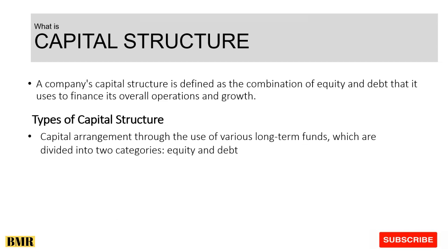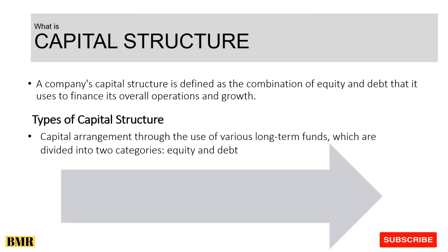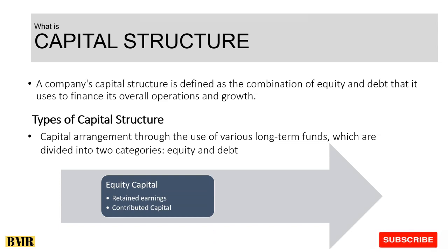The next point is types of capital structure. As mentioned, capital structure is a combination of equity and debt. The first type is equity capital, which is the money owned by the owner or the shareholders. It has two sub-types: retained earnings and contributed capital. Retained earnings is the profit that a company keeps aside to use in the future for the development and strengthening of the business. Contributed capital is the amount of money the company owner invested when planning to open the company, or the money received from shareholders.